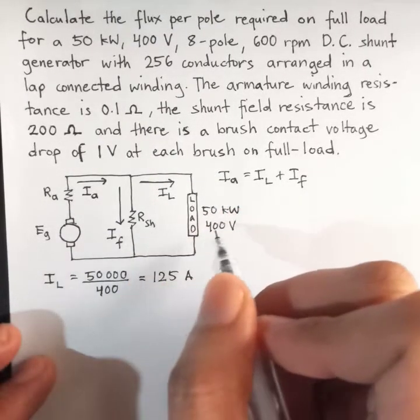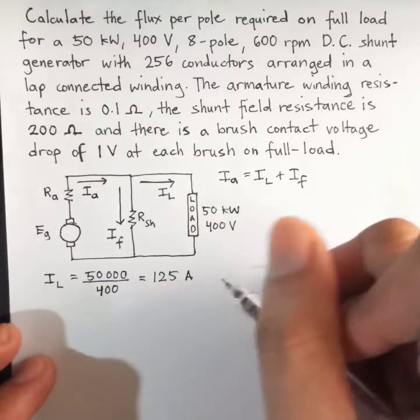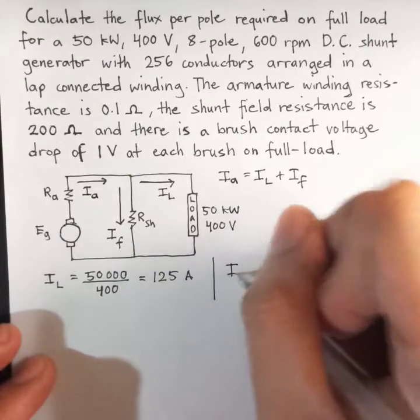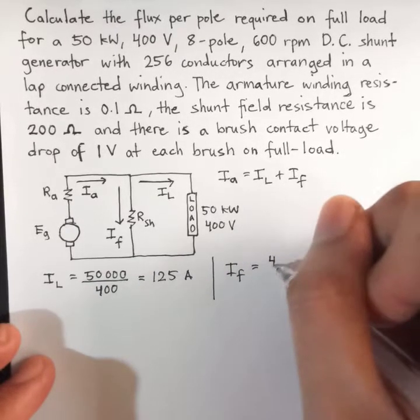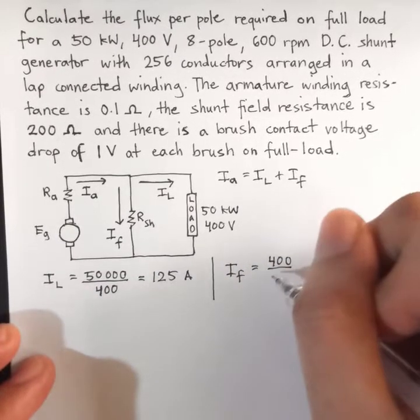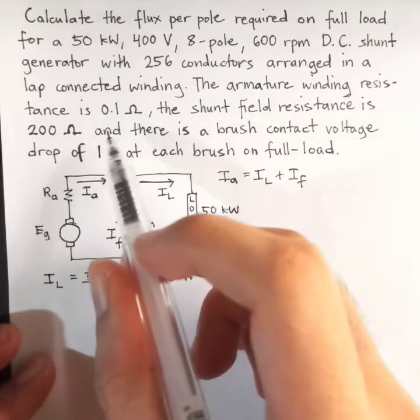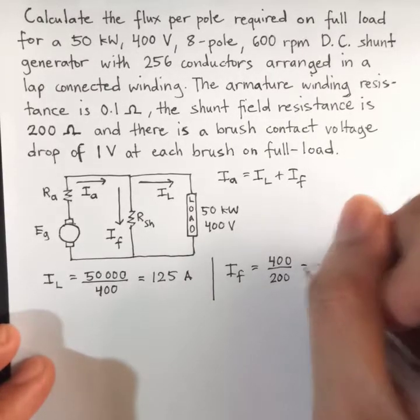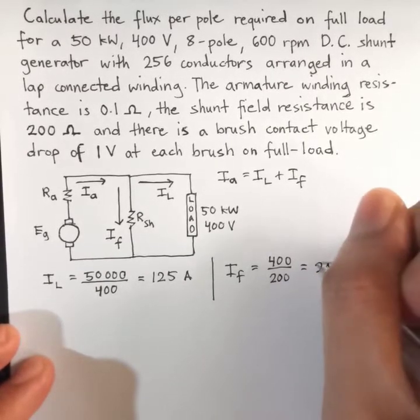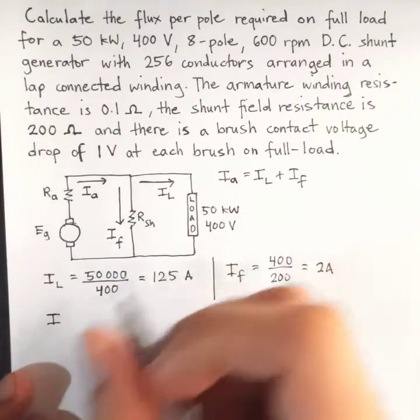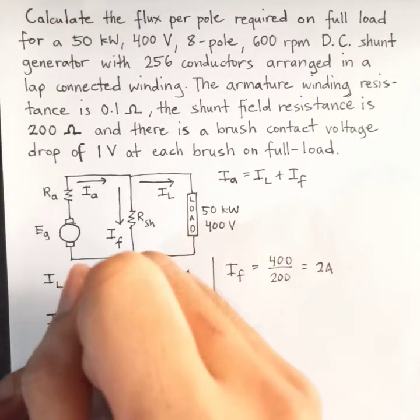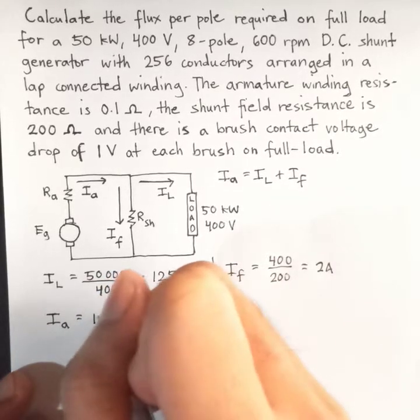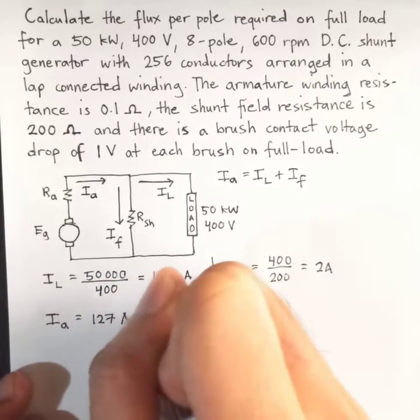Since RSH is in parallel with the load, we can solve for the IF. So, that is 400 over 200. Therefore, IF equals 2 amperes. Therefore, our IA is equal to IL plus IF, and that is 127 amperes.